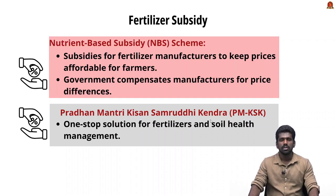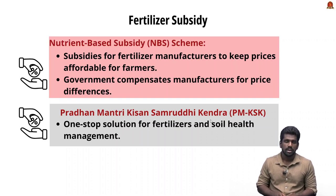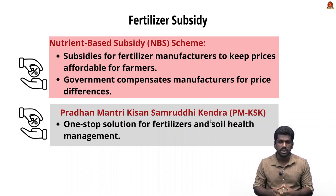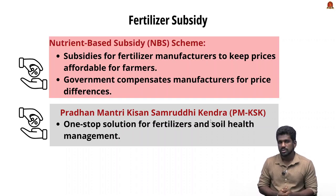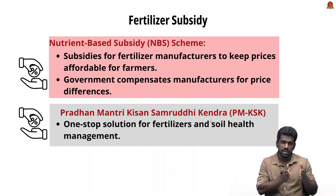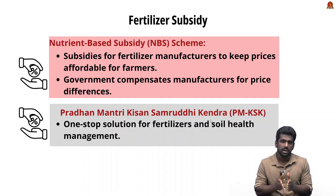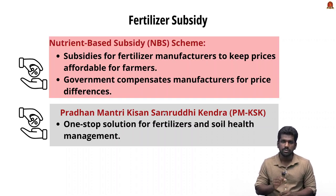Regarding fertilizer subsidies, the Nutrient Based Subsidy (NBS) scheme provides subsidies to fertilizer manufacturers to make fertilizers like urea, phosphate, and potash available at affordable prices to farmers. Prices are fixed by the government and companies are compensated for the difference between the fixed price and market cost. Under the NBS scheme, subsidy is given to fertilizer manufacturing companies — not directly to farmers — so farmers can access fertilizers at a fixed rate.